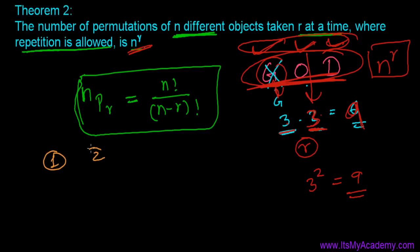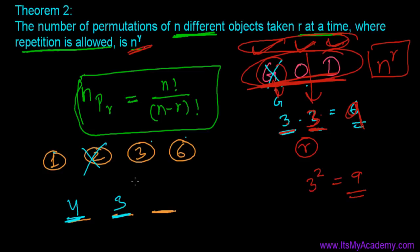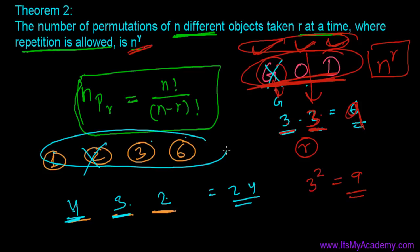Let's look at another example. I have four digits: 1, 2, 3, and 6, and I want to make a three-digit number. When repetition is not allowed, the first position has 4 options, the second has 3, and the third has 2. So four times three times two equals 24 ways to write a three-digit number without repetition.